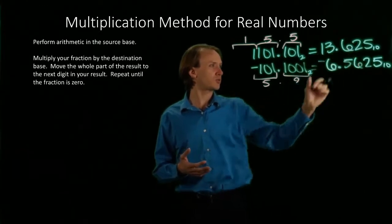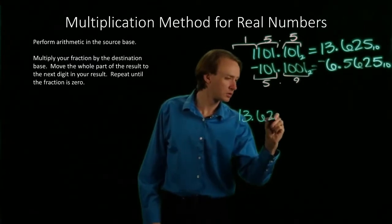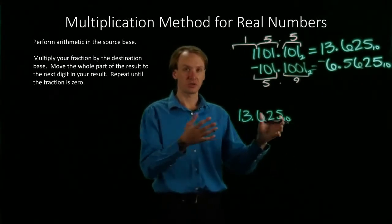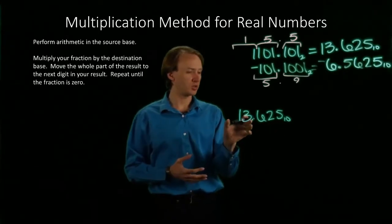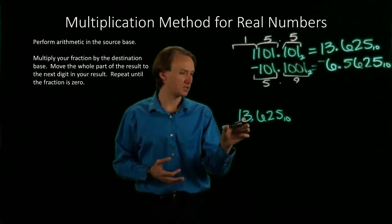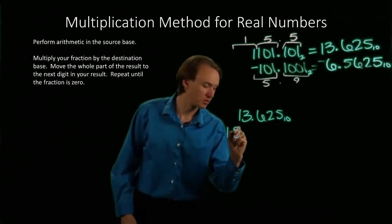So if I start with my 13.625, I'm going to break my number into two parts and work with the whole number part. So 13 in octal is 8 plus 5, so that will be 15.